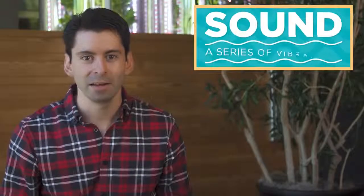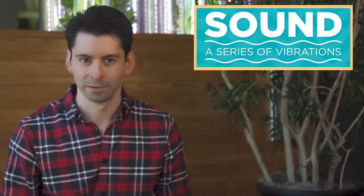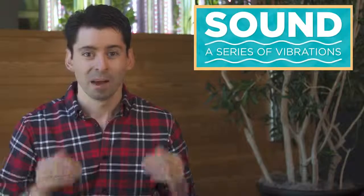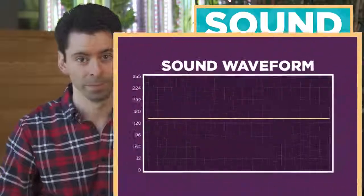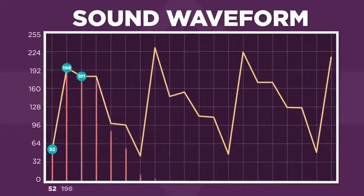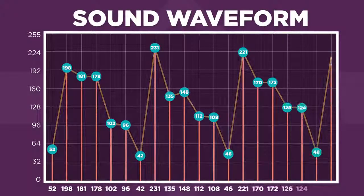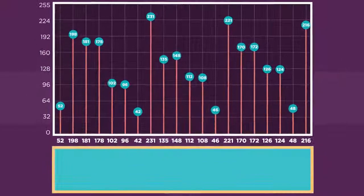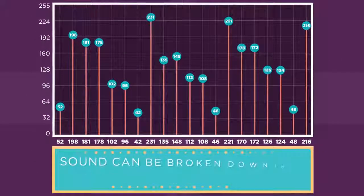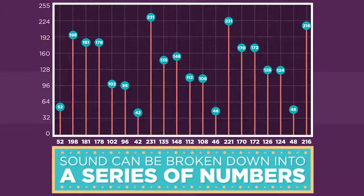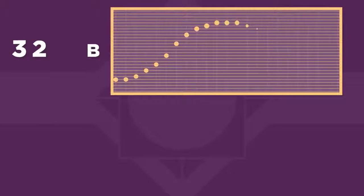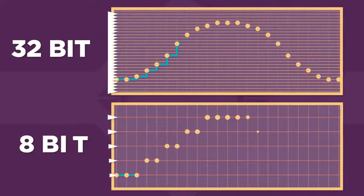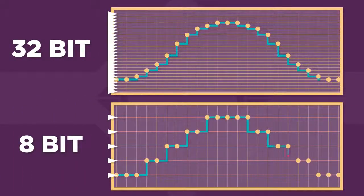Every sound is basically a series of vibrations in the air. Vibrations can be represented graphically as a waveform. Any point on this waveform can be represented by a number, and this way, any sound can be broken down into a series of numbers. If you want higher quality sound, you would pick 32-bit audio over 8-bit audio — more bits means a higher range of numbers.